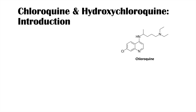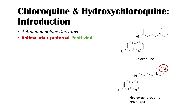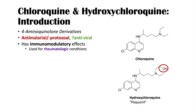So chloroquine and hydroxychloroquine — here are the chemical structures. The only difference between chloroquine and hydroxychloroquine is this hydroxyl group here. Hydroxychloroquine is also known as Plaquenil — that's the trade name. These are both four-aminoquinolone derivatives, and they are anti-malarial or anti-protozoal medications, but there's some evidence that they are also antiviral. They also have immunomodulatory effects and can be used to treat rheumatological conditions as well.